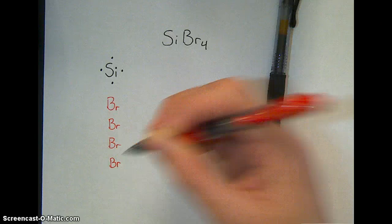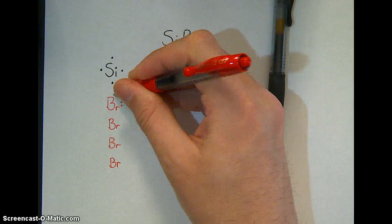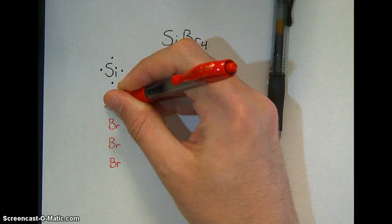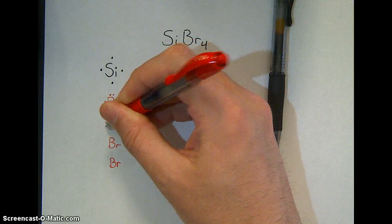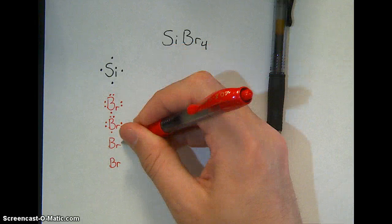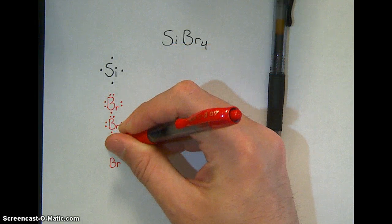Bromine, and each one gets seven electrons. That's three pairs and a single. It doesn't really matter which side you put the pairs and the single on, as long as you have seven, and it's three pairs and a single for each bromine.